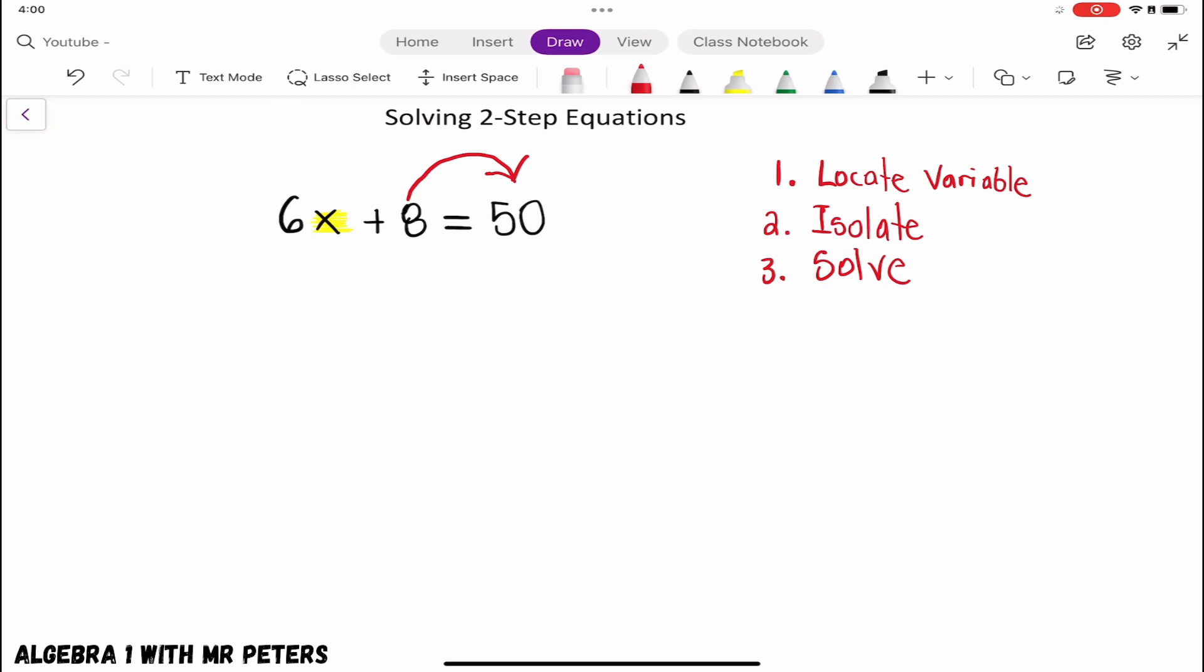So the opposite, what is the opposite of a positive 8? A negative 8. So what we want to do is subtract 8 from itself. And that cancels out.